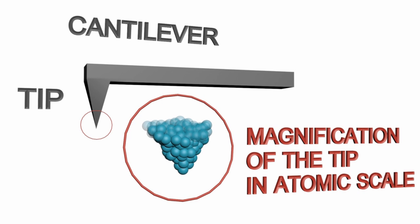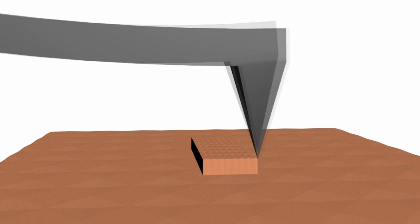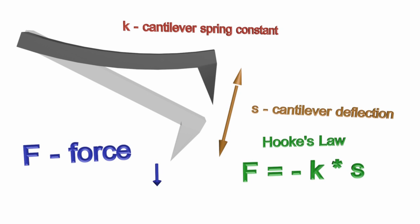The tip is attached to a cantilever and if the tip interacts with the surface detail, then the cantilever bends. The force needed to bend the cantilever is described by Hooke's Law, where the force directly depends on the spring constant and cantilever deflection.